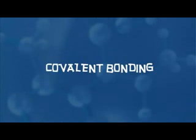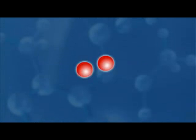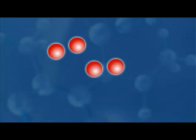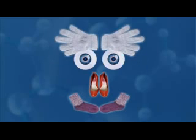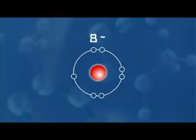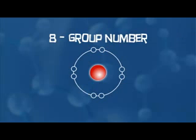Covalent bonding between two atoms needn't be with just one pair of electrons — you can get two and even three pairs, but always pairs. It's like socks, shoes, gloves, or eyeballs. Here's a way to work out how many covalent bonds an atom can make: it's eight minus the group number.